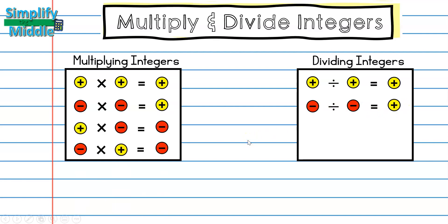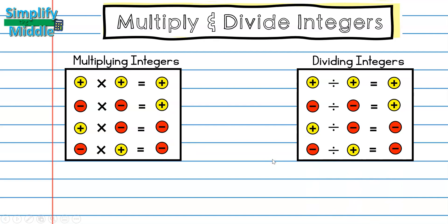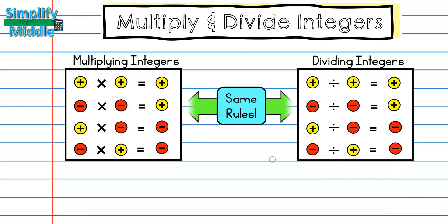When one sign is different from the other, both multiplication and division result in a negative answer. It doesn't matter if it's positive times negative or negative times positive — both give a negative. The rules for multiplying and dividing integers are exactly the same; the only difference is the operation sign.